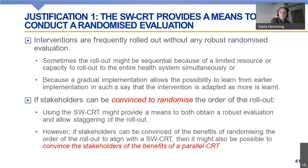The first justification is that the stepped wedge design might provide the means to do a randomized evaluation where, without this design choice, a randomized evaluation wouldn't be possible. Interventions are often rolled out without robust evaluation, but sometimes this rollout might be sequential because of limited resources or minimal capacity to roll out simultaneously, or because a gradual rollout allows tweaking as more is learned. If stakeholders can be convinced to randomize the order of the rollout, then the stepped wedge design allows evaluation using randomization. However, if stakeholders can be convinced to randomize the order, then it might also be possible to convince them of the benefit of randomizing under a parallel design.